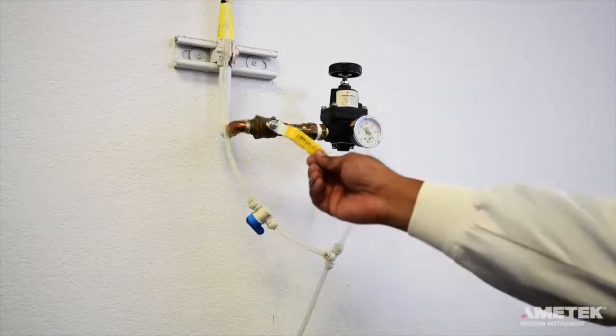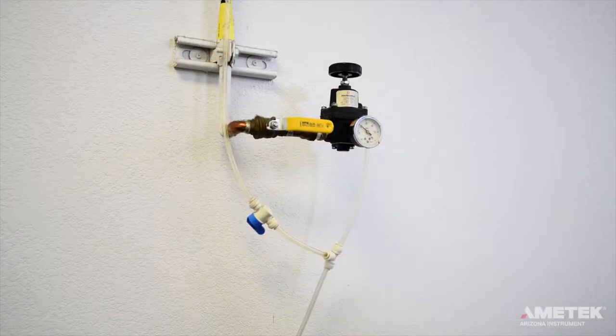For both of these options, be sure to adjust the pressure to the instrument so that it is between 17 and 22 psi, with 20 psi being the preferred pressure. If you are using a compressed gas cylinder, a two-stage regulator is recommended.